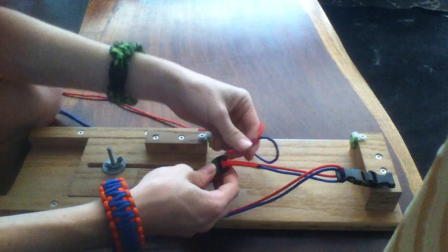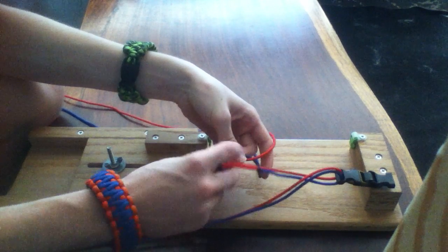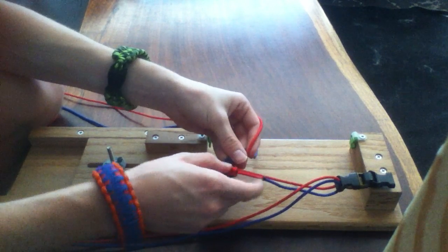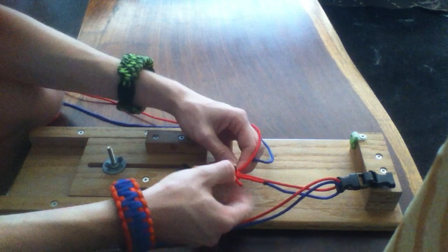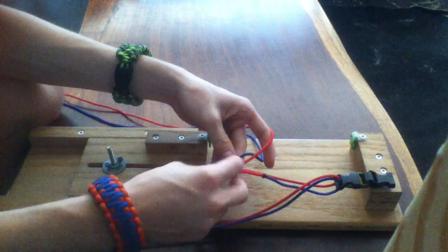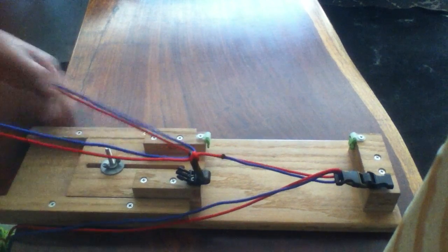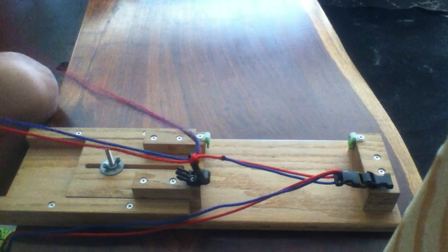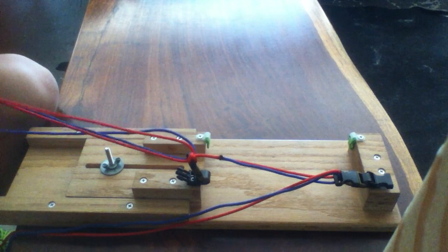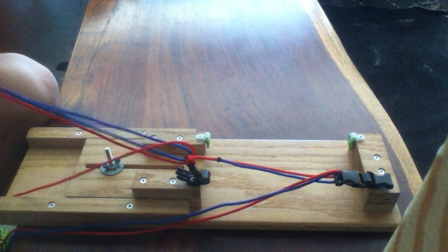I always do this with the same colors touching, or the inside colors touching, which is going to be the red here. And just do the same thing you did for the first set of cord. Stick it, or make your knot here.